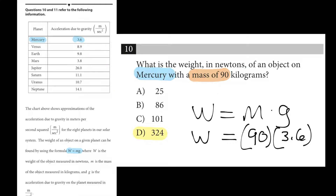Question number 10: what is the weight in Newtons of an object on Mercury with mass of 90 kilograms? Here we can see there's an equation that says W equals M times G. M is going to be the 90 kilograms, and Mercury is going to have a G of 3.6. 90 times 3.6 is 324.